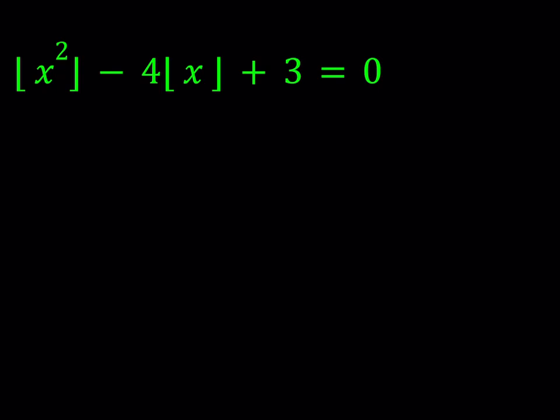We're going to be solving for values of x here. First of all, notice that this problem does not have any negative solutions. Why is that? Because if you isolate the floor value of x squared, you're going to notice something interesting — it's going to equal 4 times the floor value of x minus 3. So if x is actually less than 0, 4 times the floor value of x is going to be negative, and then the right-hand side is going to be negative when the left-hand side is positive. Therefore, we're not going to have any negative solutions. Is x equal to 0 a solution? It's not a solution either.